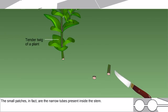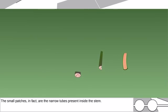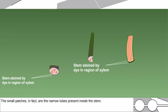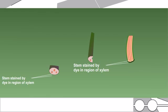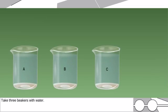The small patches in fact are the narrow tubes present inside the stem. Method B: Take three beakers with water.